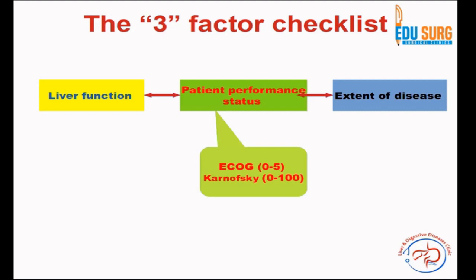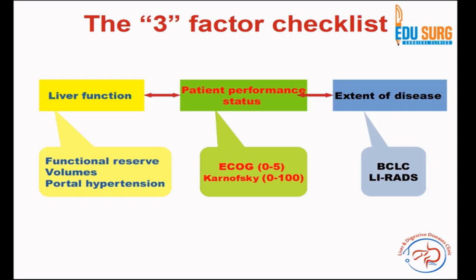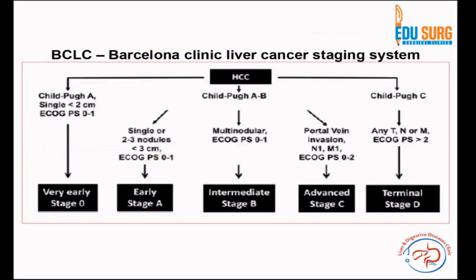Performance status can be assessed using the ECOG or Karnovsky scale. Extent of disease, as Ammar has discussed, is now based on the LYRAD system. Liver function is a tricky part because these patients can be cirrhotic or non-cirrhotic. We assess liver function using the Child-Pugh score and the MELD score to assess functional reserve. We have started doing functional volumetry, predominantly CT volumetry. For portal hypertension, we assess using upper GI endoscopy for absence of varices, splenomegaly, platelet count, and portal vein diameter on Doppler.